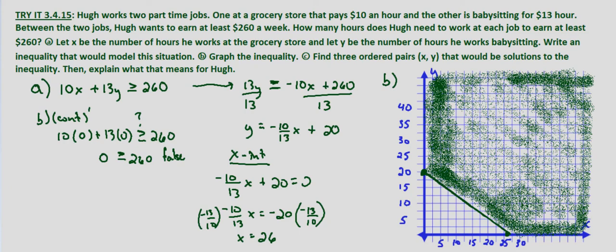And then we're asked to pick, in part C, three ordered pairs that would be solutions to the inequality. So let's say we pick (26, 0). And you can pick any three points you want. Let's go with (20, 20). And let's go with (0, 40).